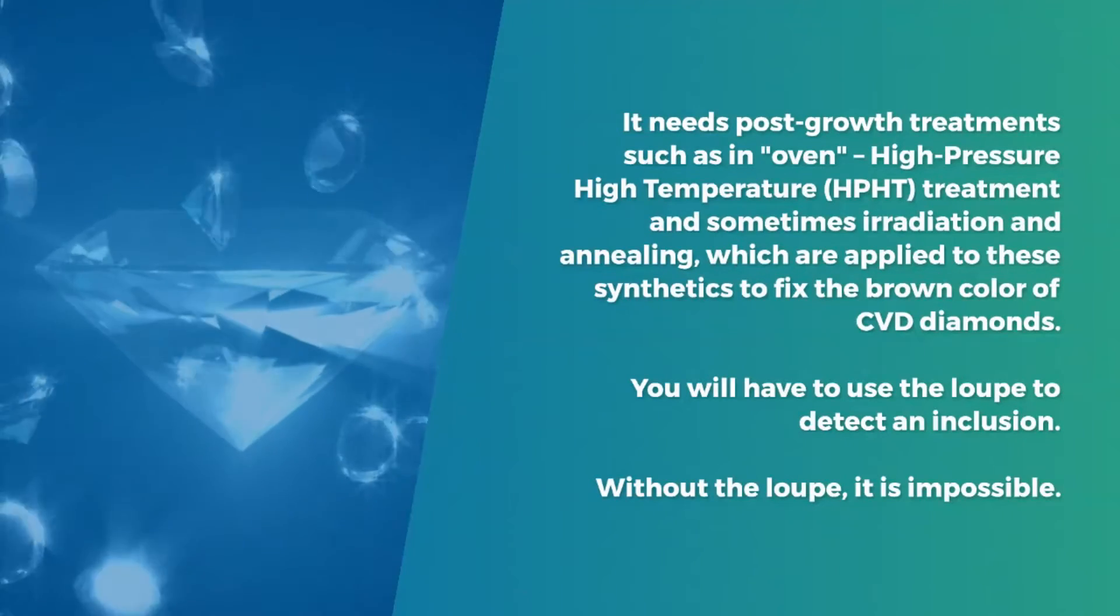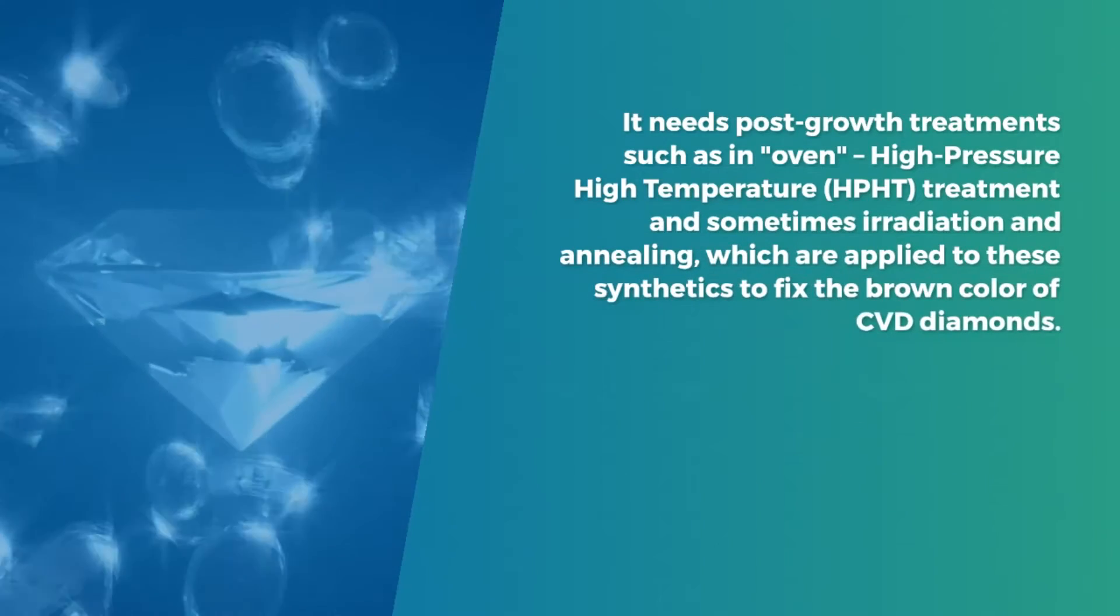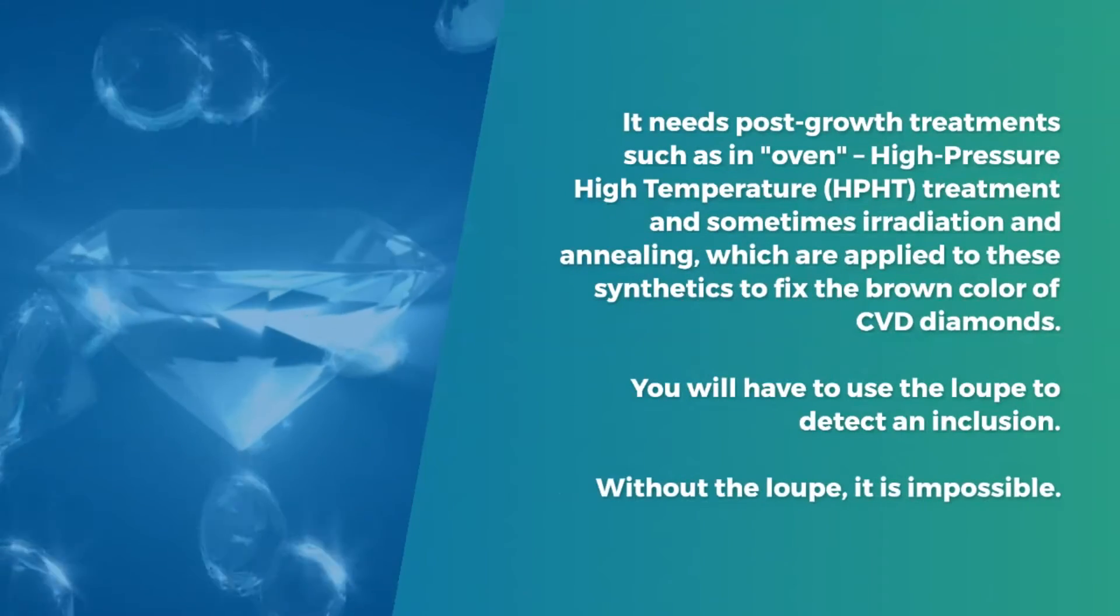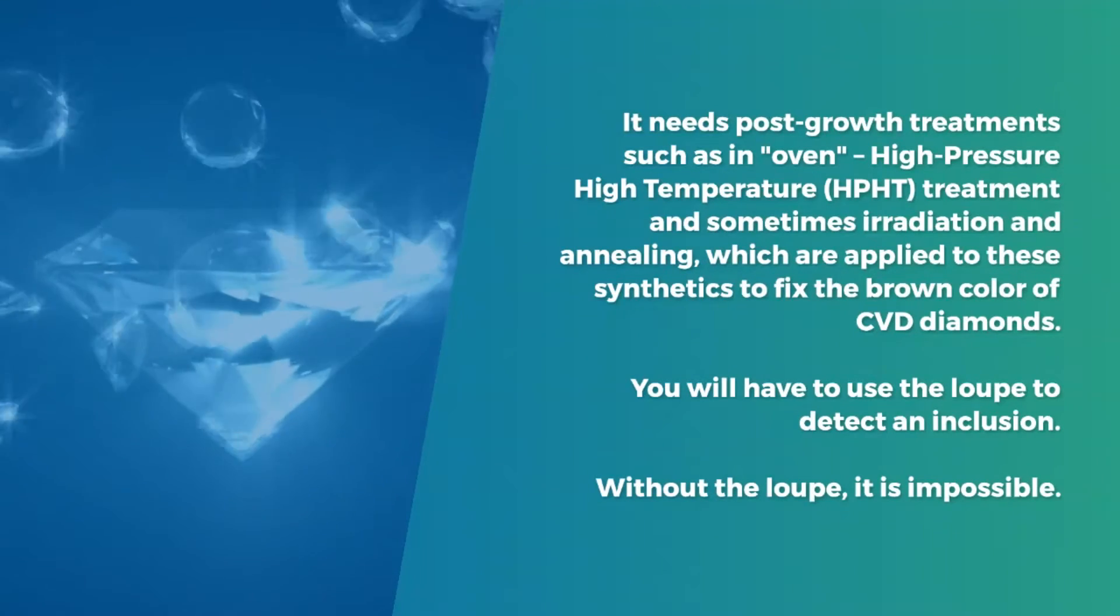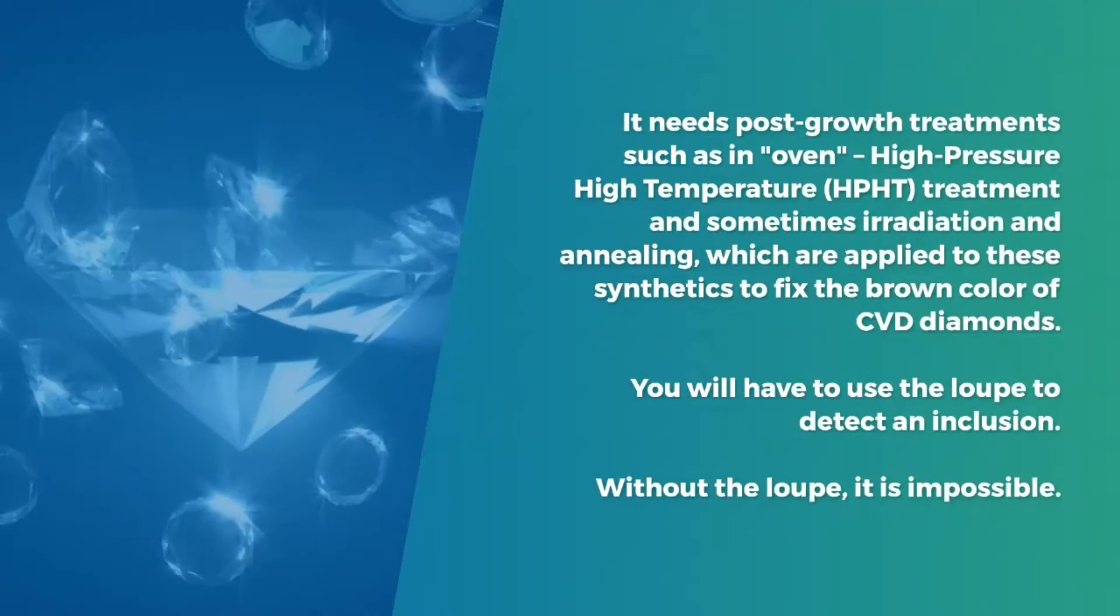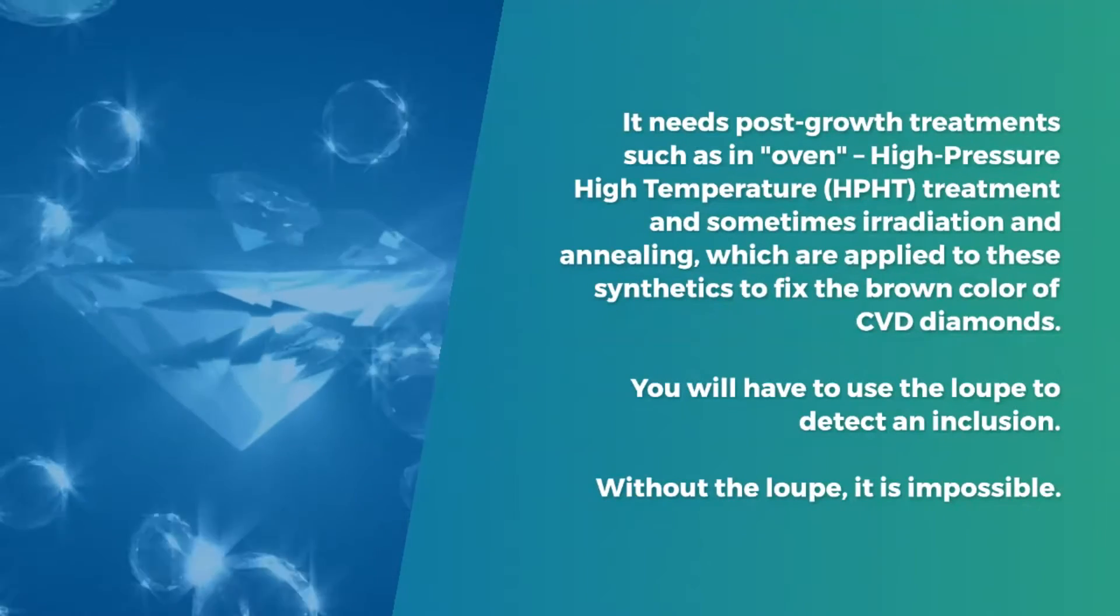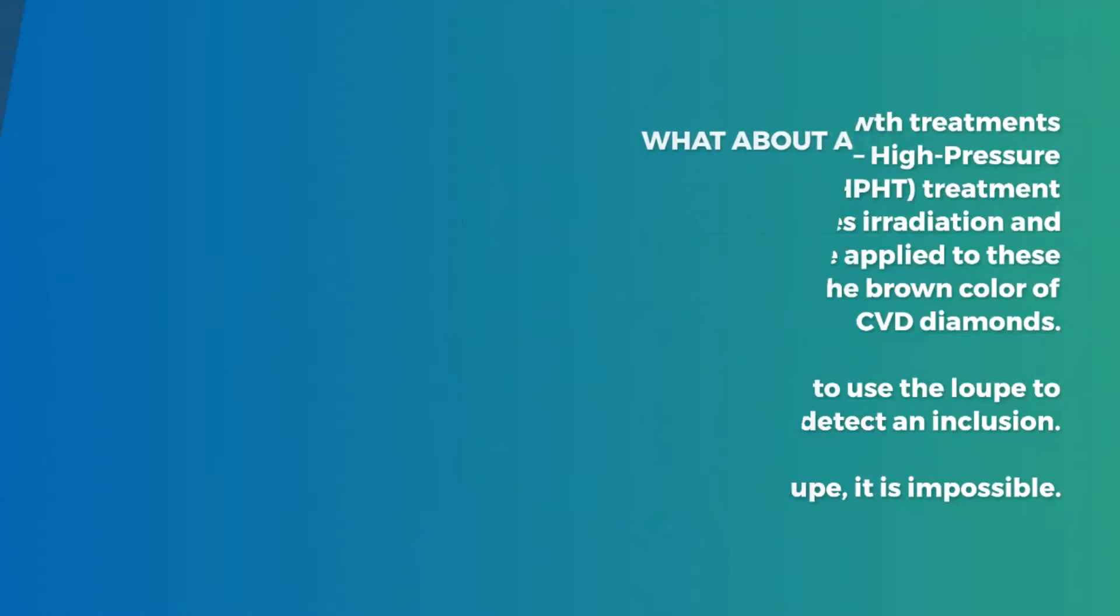It needs post-growth treatments such as in-oven high pressure high temperature HPHT treatment, and sometimes irradiation and annealing, which are applied to these synthetics to fix the brown color of CVD diamonds. You will have to use the loupe to detect an inclusion. Without the loupe, it is impossible.